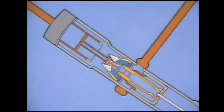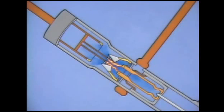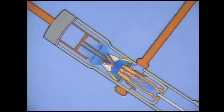When the arcing contact fingers separate, the compression chamber opens. The high pressure gas in the chamber flows through the arc to the low pressure areas of the interrupter. The dielectric strength of the high pressure gas weakens the arc, and as the gas flows through the arc, the arc is lengthened and cooled until it extinguishes at a current zero.